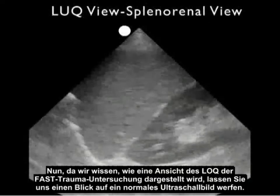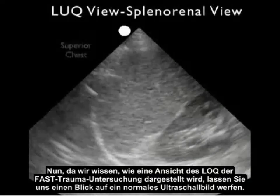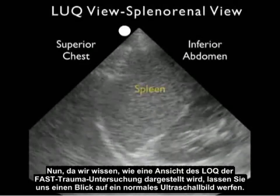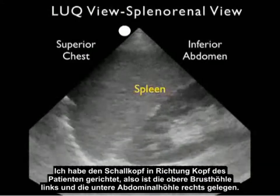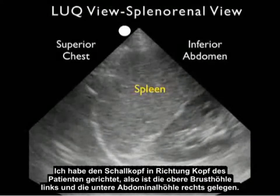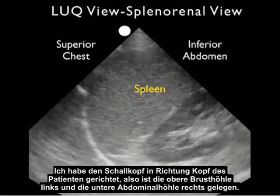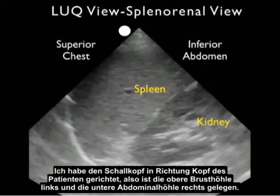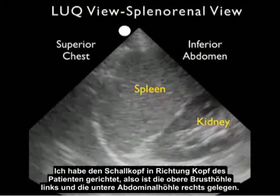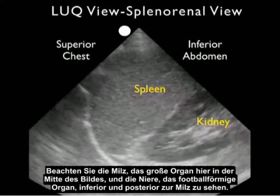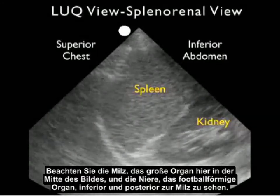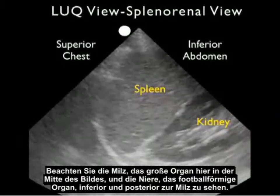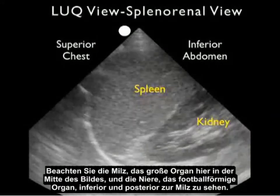Now that we know how to perform the left upper quadrant view, let's take a look at a normal ultrasound image. I have the probe oriented towards the patient's head so the superior chest cavity is towards the left and the inferior abdominal cavity is towards the right. Notice the spleen — the large organ in the middle of the image — and the kidney, the football-shaped organ, seen inferior and posterior to the spleen.